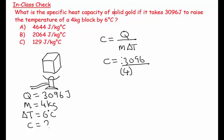So it's 3,096 joules and the mass of our sample was four and the temperature change in this case was six. So this is 3,096 over 24, so C would equal 129.